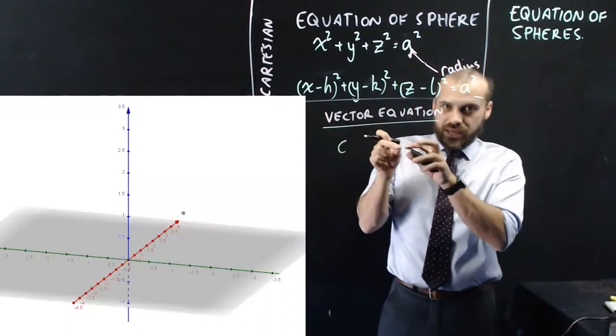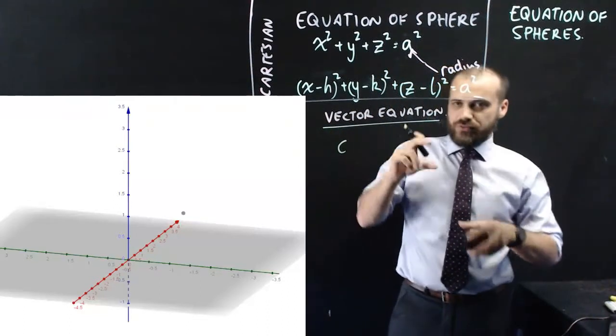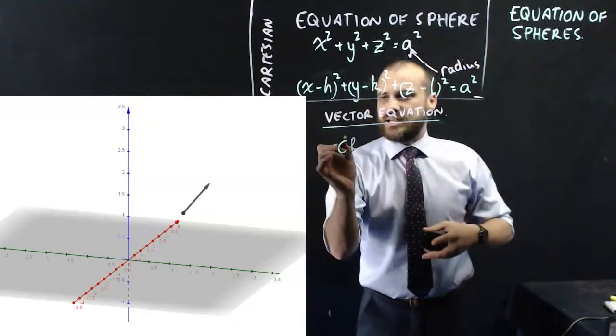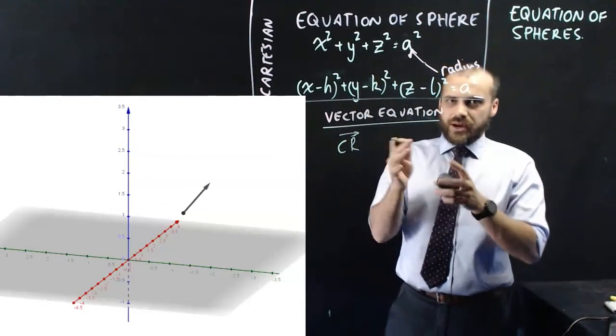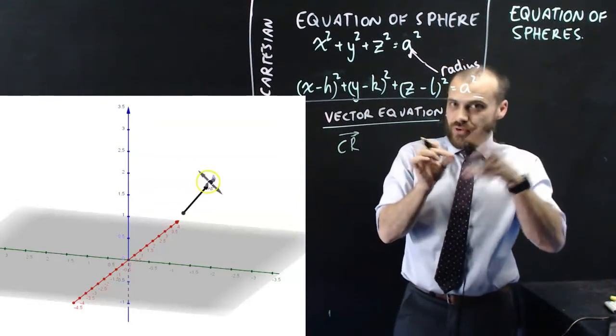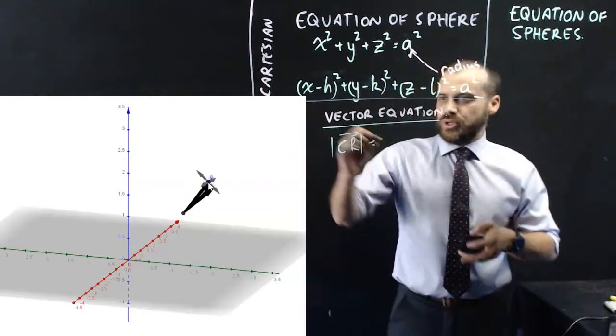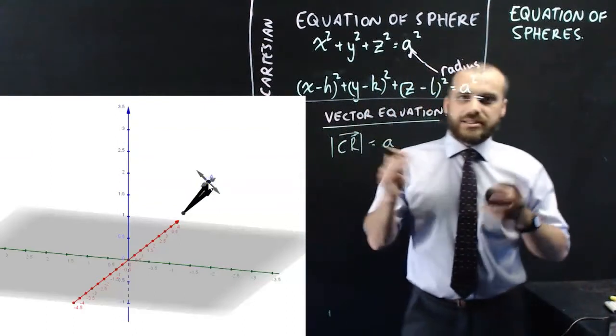We then need to create a new vector to point r. So that's vector c, r. Now, we need the magnitude of vector c, r to be equal to just the radius that we want.